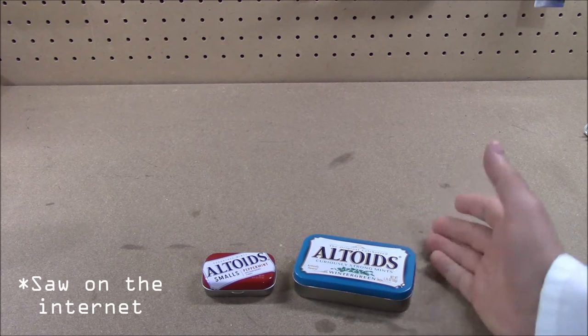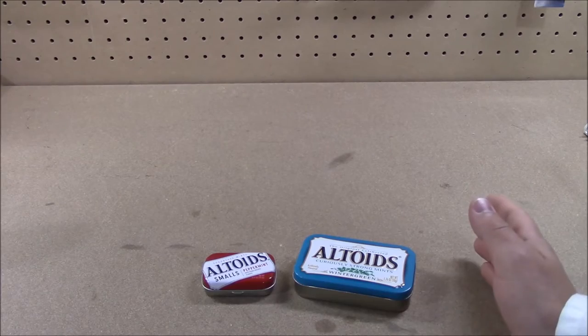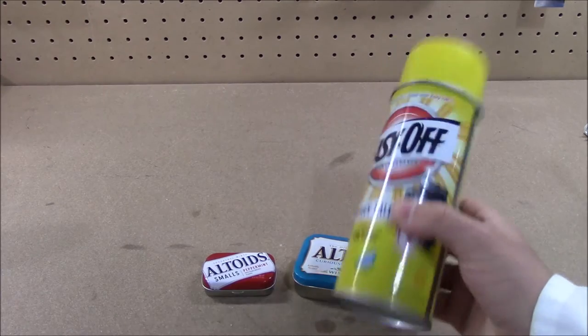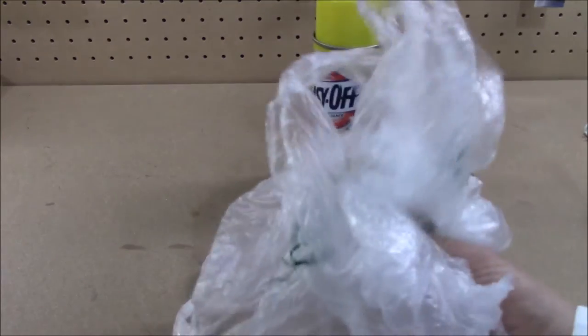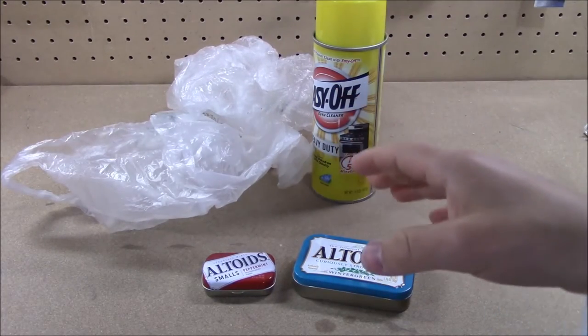So, in order to strip these off of here, I read that there's two methods. I've never done this before, but I've read there's two methods. One, oven cleaner and plastic bags, where you spray the oven cleaner in there and leave it outside on a hot